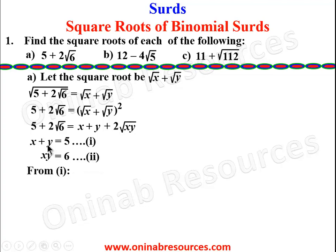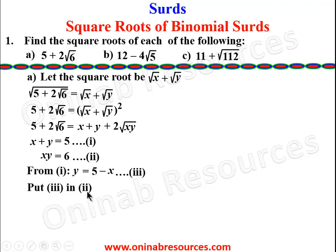From equation 1, we make y the subject: y = 5 - x — we call this equation 3. We substitute equation 3 into equation 2: wherever we see y, we put 5 - x. Since xy = 6, we have x(5 - x) = 6. Expanding: 5x - x² = 6.